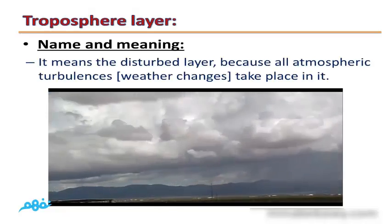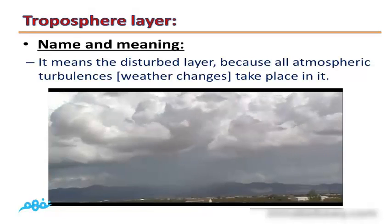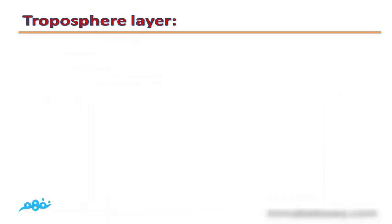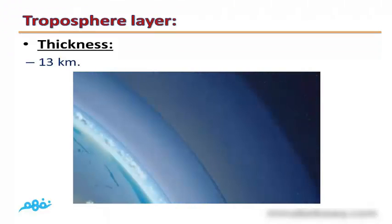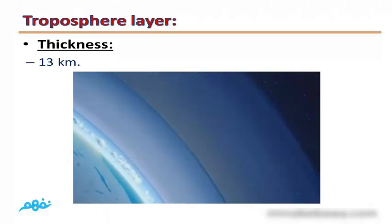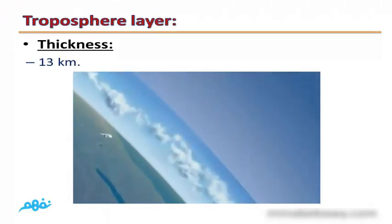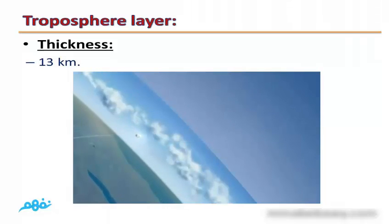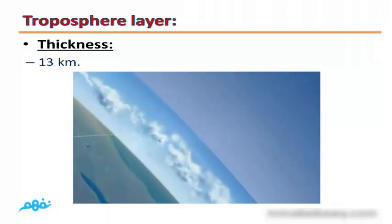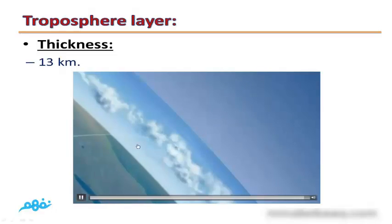The first layer is called the Troposphere, meaning 'the disturbed layer,' because all atmospheric turbulences and weather changes — rain, clouds, and storms — take place in it. The thickness of the Troposphere layer is 13 km from sea level to its end.